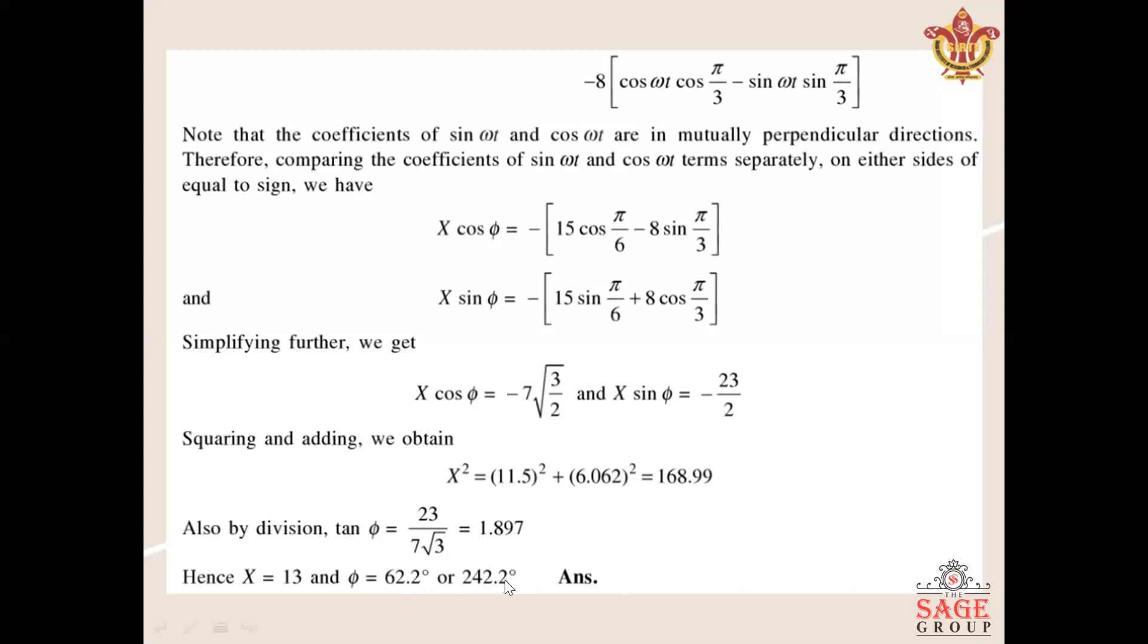So this is the resultant motion which can be applied on the system so the system can be static. When measuring the angle clockwise, this value is 62.2 degrees, and for counterclockwise, the value is 242.2 degrees.